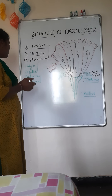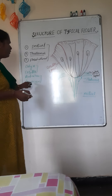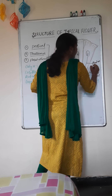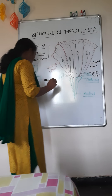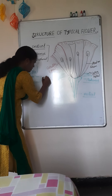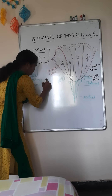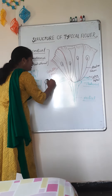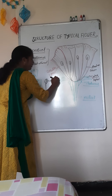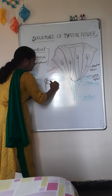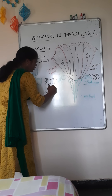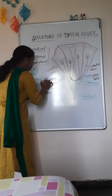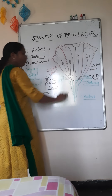The essential whorls consist of two parts: the first is the androecium and the second is the gynoecium. The androecium is the male reproductive part. The individual part of the androecium is called the stamen. The stamen consists of three parts: the first is the anther, the second is the connective, and the third is the filament. The anther produces the pollen grain, the connective connects the two anther lobes, and the filament fixes the stamen in position.